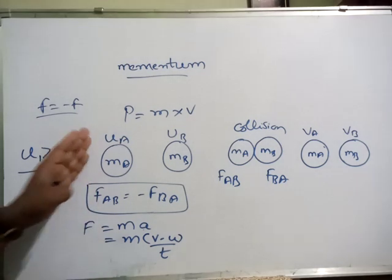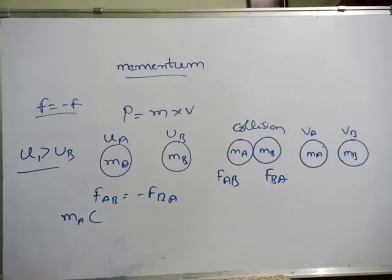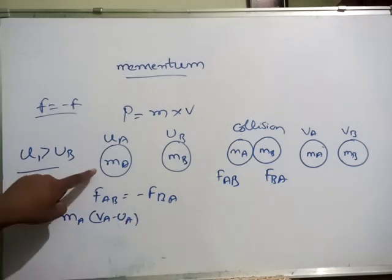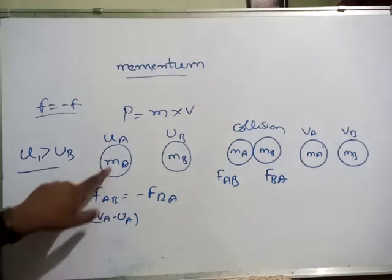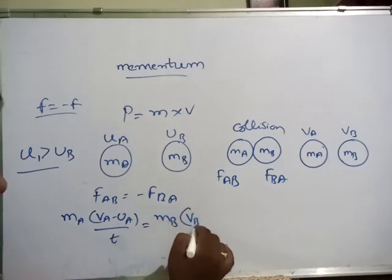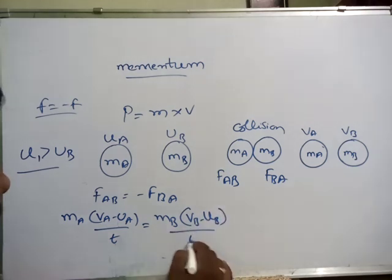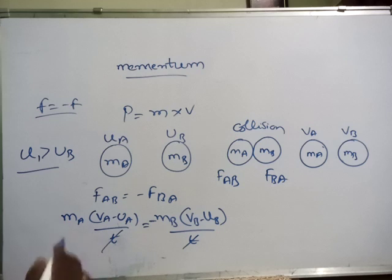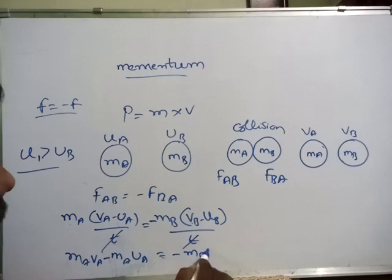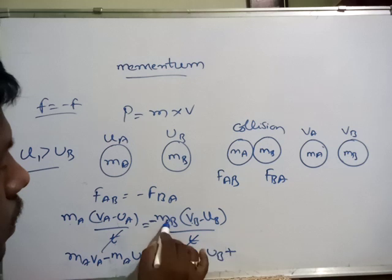We apply the same thing to these two different balls. For the first body: MA into (VA minus UA) divided by time, is equal to minus MB into (VB minus UB) divided by time. Both sides time gets cancelled. Multiplying out: MA·VA minus MA·UA equals minus MB·VB plus MB·UB.